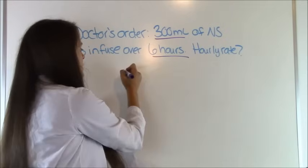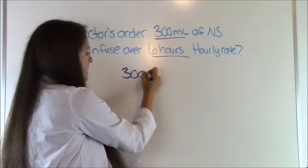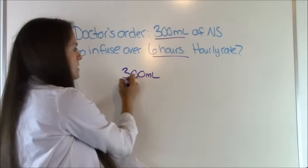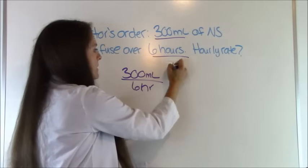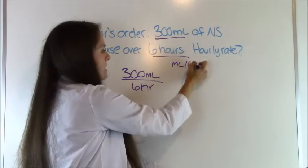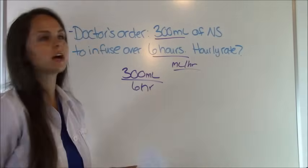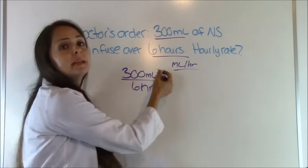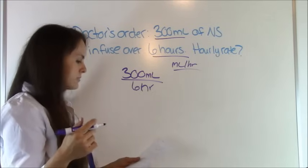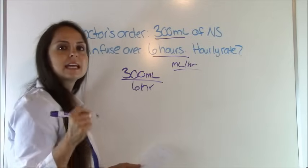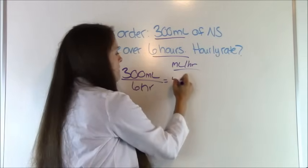Let's see. We're going to say 300 milliliters because that's what they ordered to go in over 6 hours. And where we're trying to get is milliliters per hour. That's our goal. That's what we're trying to figure out. So we already have milliliters per hour so all we got to do is divide.